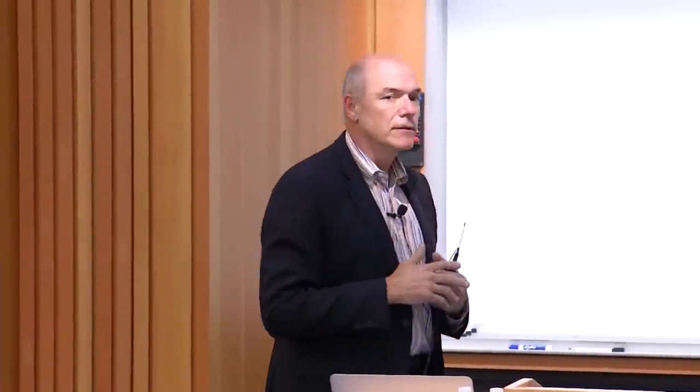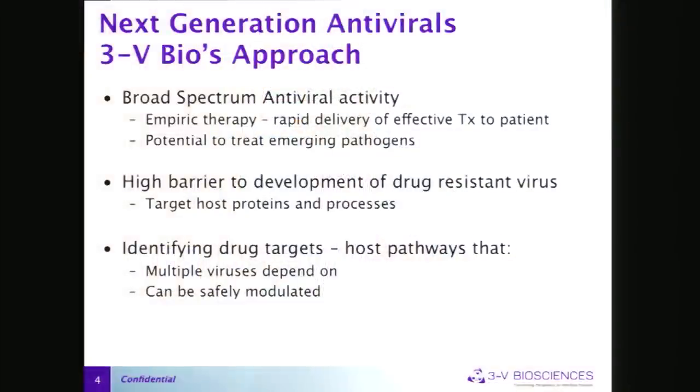This approach also gives you the potential to treat emergent pathogens. It takes on average eight to ten years to go from an idea or first clinical trial to a registered antiviral drug — sometimes too long if a virus is running rampant. So if you have an already registered drug that's gone through all those hurdles, and a new emergent pathogen appears, you have a chance to actively intervene. We also think host factor antivirals have a high barrier to the development of drug-resistant virus.